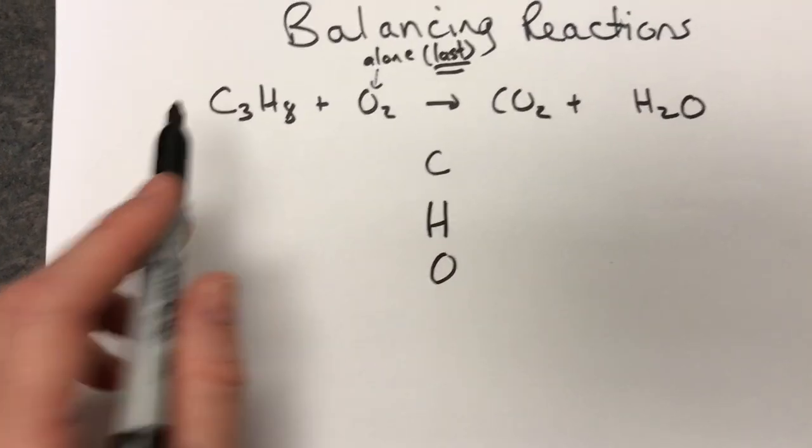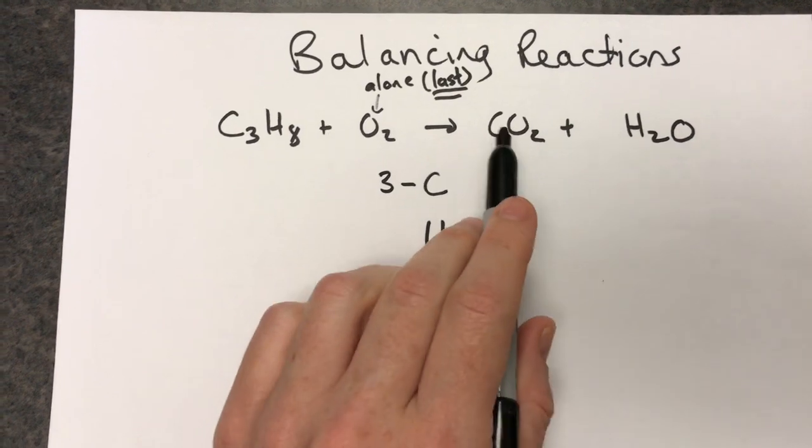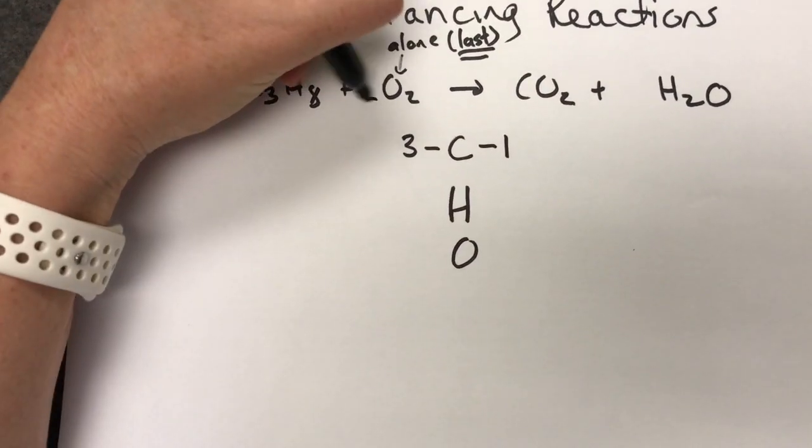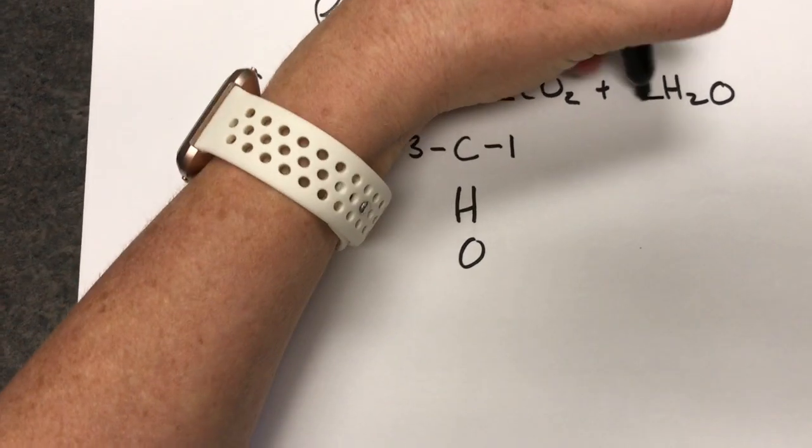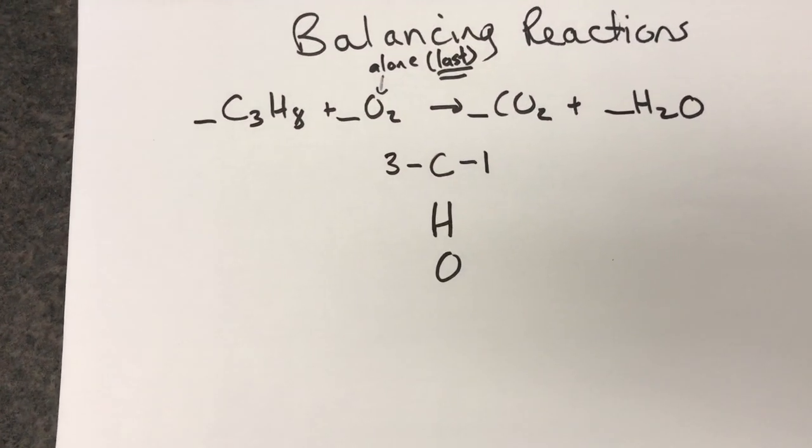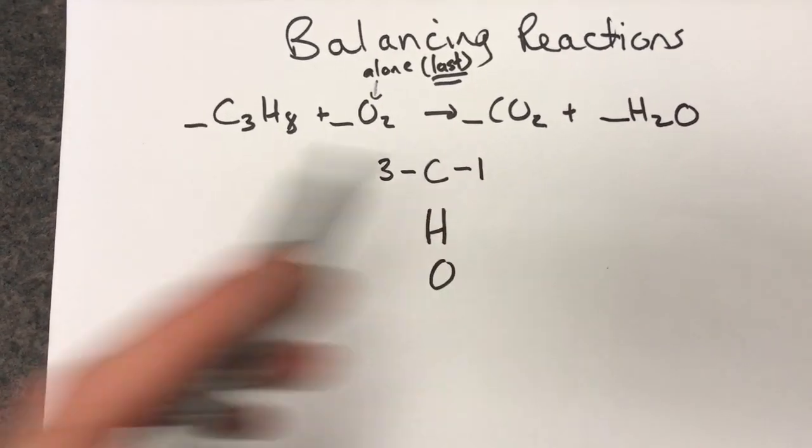Alright so on the left hand side here we have three carbons. On the right hand side we only have one. Now remember when we're balancing reactions we can only change the coefficient in front of each compound or molecule. We can only change the coefficient. We can't change anything else.